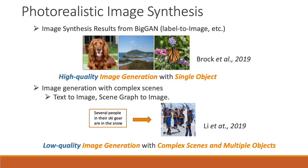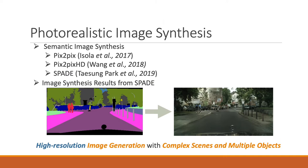However, the current works can produce either high-quality images with single objects or low-quality images with complex scenes. Image generation from fine-grained semantic segmentation can generate high-resolution images with complex scenes; however, it costs too much human labeling effort to collect the fine-grained segmentation.